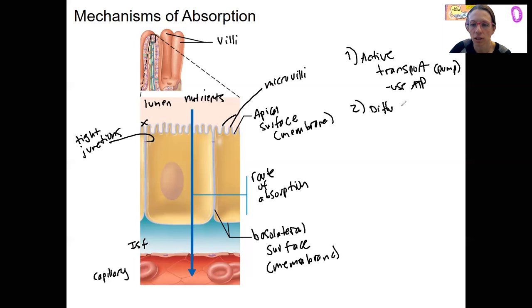Diffusion. Diffusion by nature is passive, and it can only occur for hydrophobic substances, right? That's going down an electrochemical gradient as well.